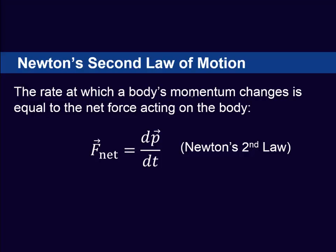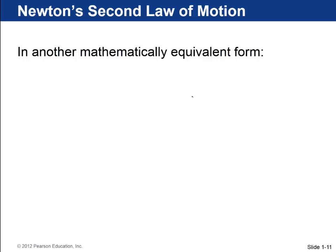Newton's second law of motion is that the rate at which a body's momentum changes is equal to the net force that is acting on the body. The rate something changes is the derivative, time derivative, d by dt of P equals the net force. That's the way Isaac Newton wrote it down in his Principia book long ago.